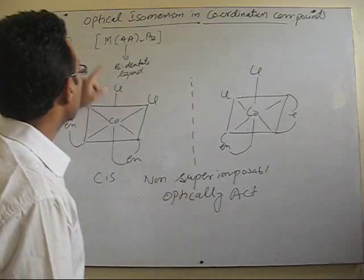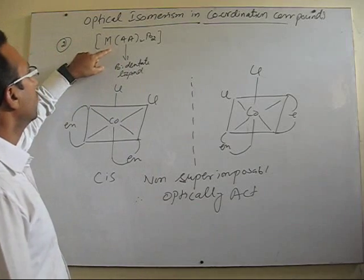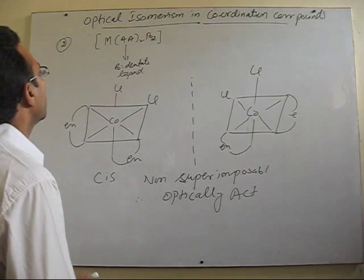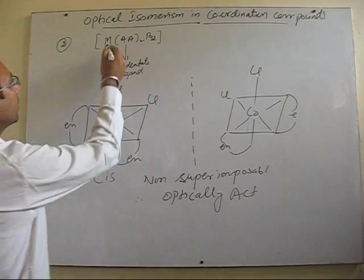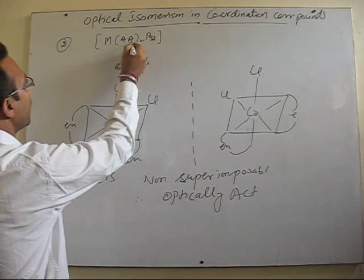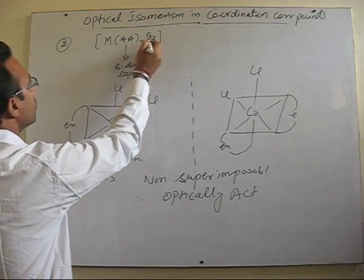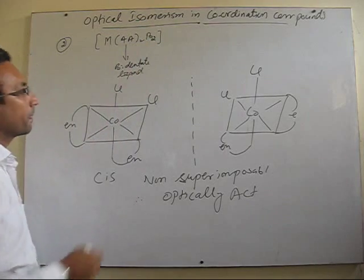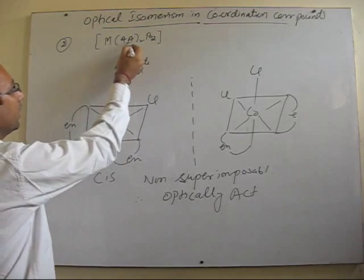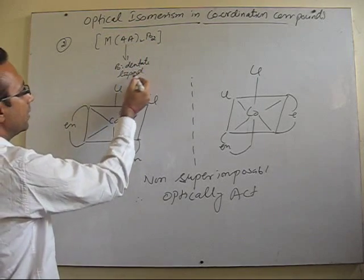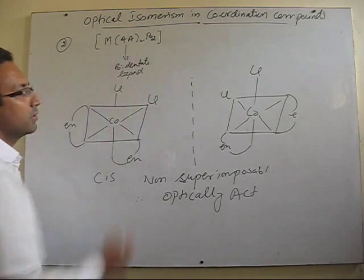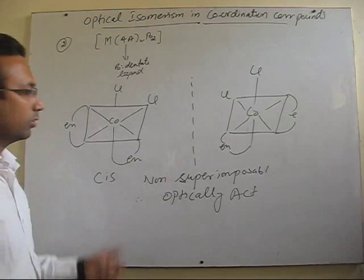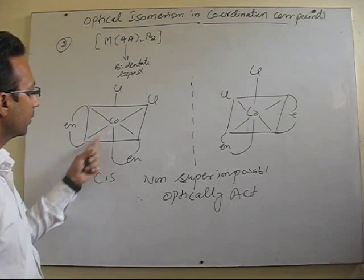Let's start with the next example. In this case, it is MA₂B₂ type, in which AA is a bidentate ligand with same donor atoms.